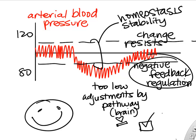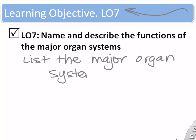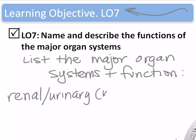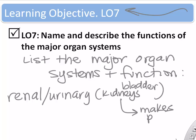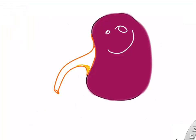We can check in class to make sure this is making sense. The final learning objective is to name and describe the functions of the major organ systems — you can do this one on your own using Wikipedia or your textbook. Here's an example: the urinary system involves the kidneys, bladder, and other organs; they make urine to remove waste and things the body no longer needs. Just spend a couple of minutes on that. That's it — I'll see you in class.